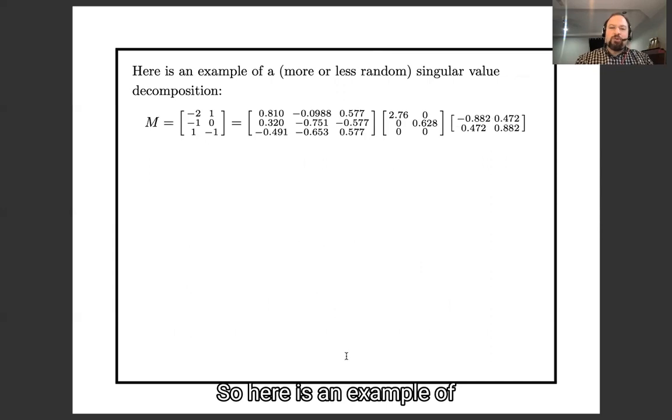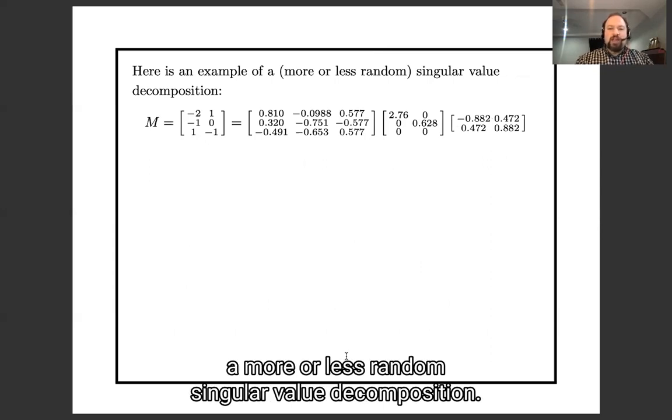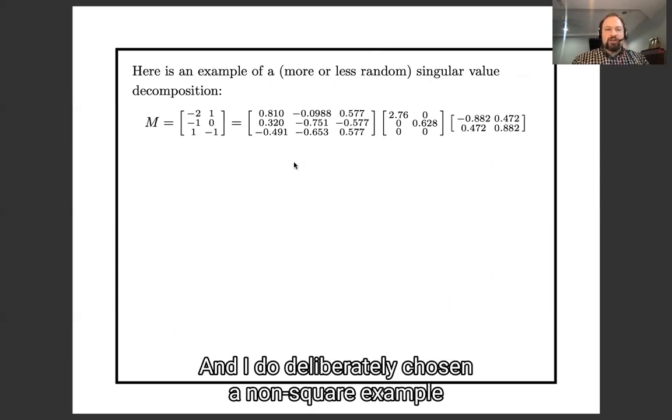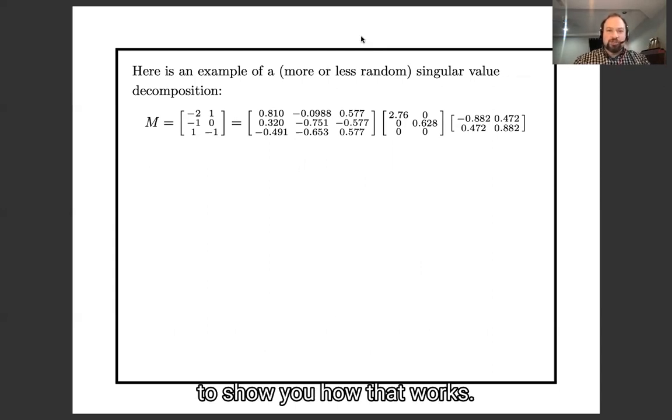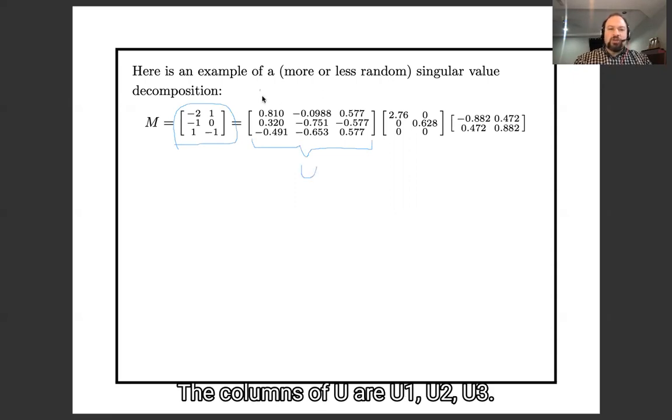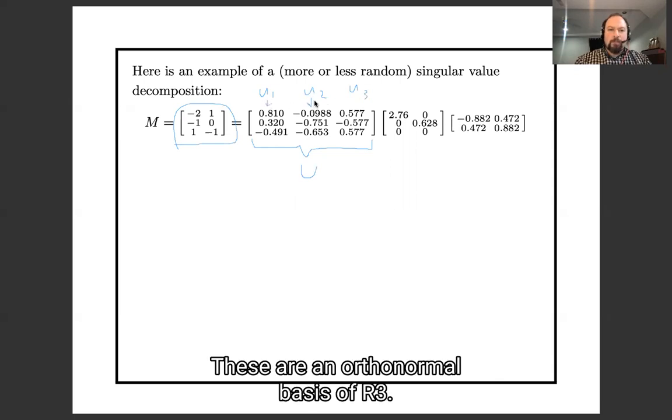So here is an example of a more or less random singular value decomposition and I deliberately chose a non-square example to show you how that works. Here is my original matrix M. Here is my U. The columns of U are u1, u2, u3.